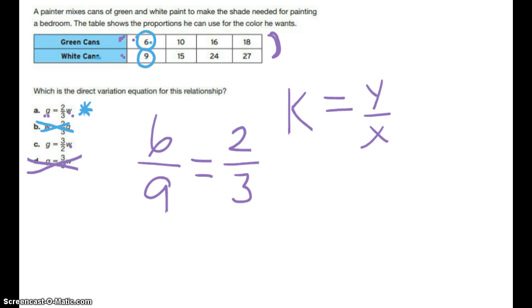And then, the last one, are the green cans 3 halves of the white cans? That means 1 and a half times the white. Is 6 1 and a half times my white? Is 6 1 and a half times 9? No. It's smaller.